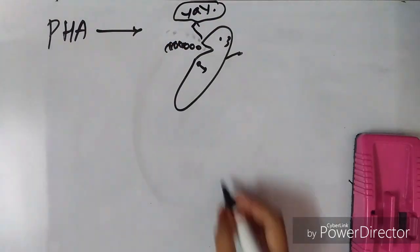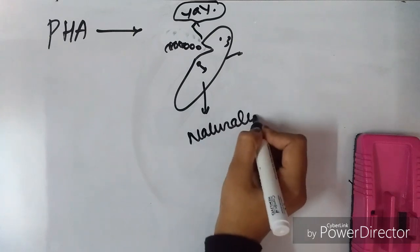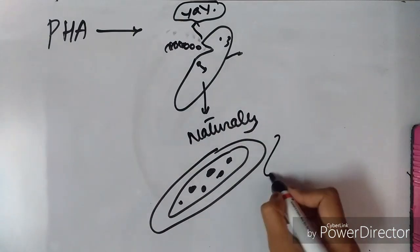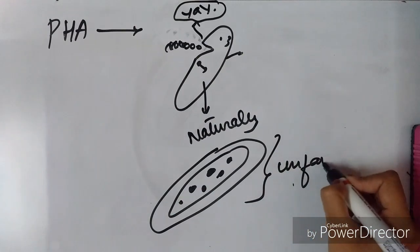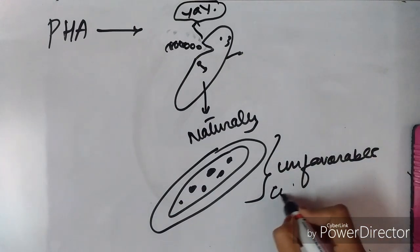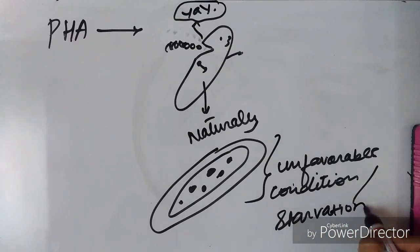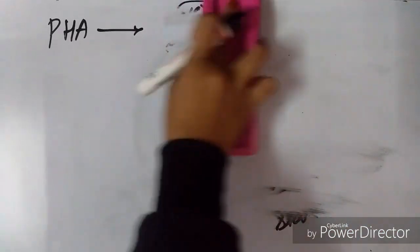When there are less nutrients, starvation, or dryness with no moisture available in the media or soil, these bacteria accumulate PHA inside themselves as stored or reserved food material.